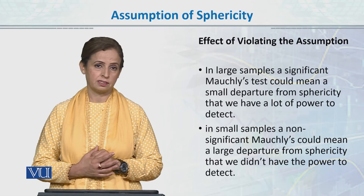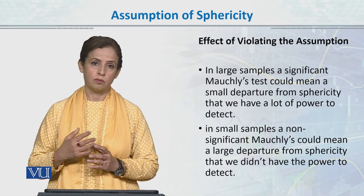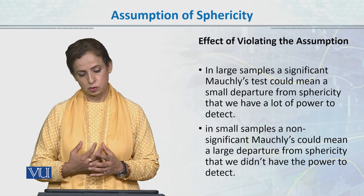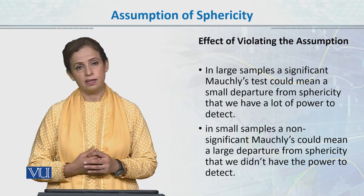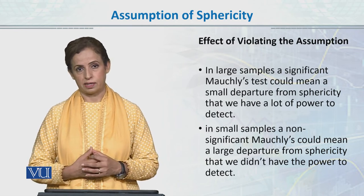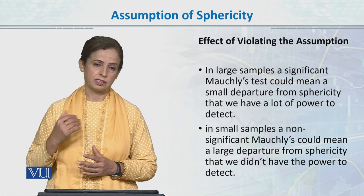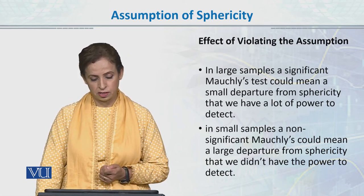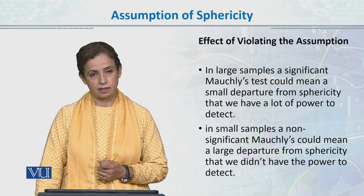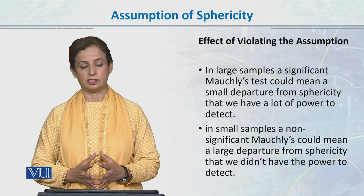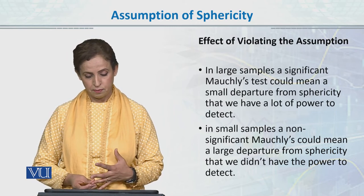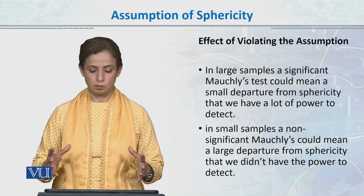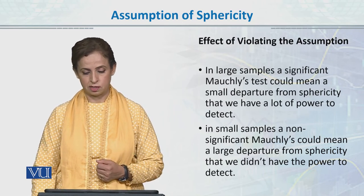Sample size से हमारा effect होता है — large samples में Mauchly's test की value significant हो जाती है, हालांके हम चाहते हैं कि non-significant हो। Safer side के लिए आप Greenhouse-Geisser की value report कर सकते हैं। Small samples में अगर Mauchly's test non-significant आती है, तो उसका मतलब यह भी हो सकता है कि हमारे पास assumption से large departure detect करने की power नहीं थी।